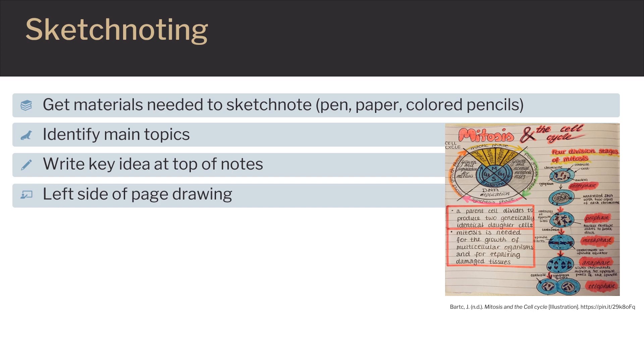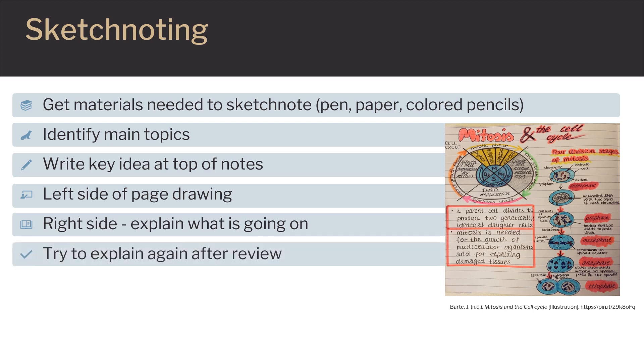Finally, you would draw the result of mitosis, the two new cells that were made as a result. On the right side of your notes, you would explain in your own words what is happening at each stage that was drawn. You can vary this as well where the drawing and explanation can be combined.